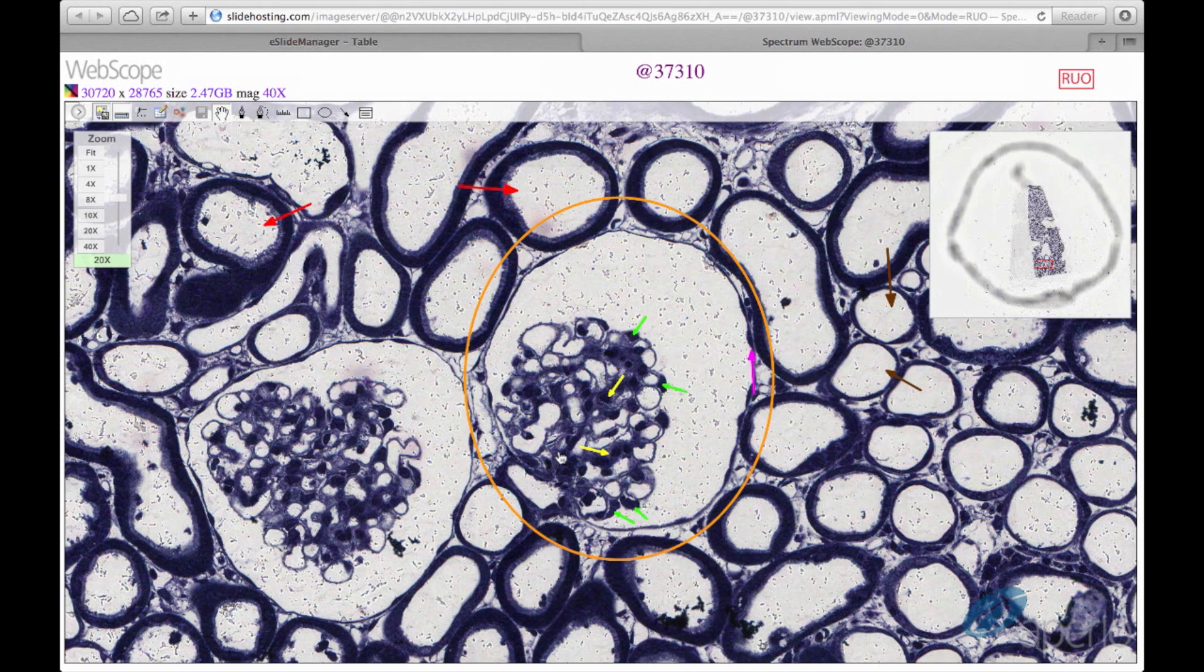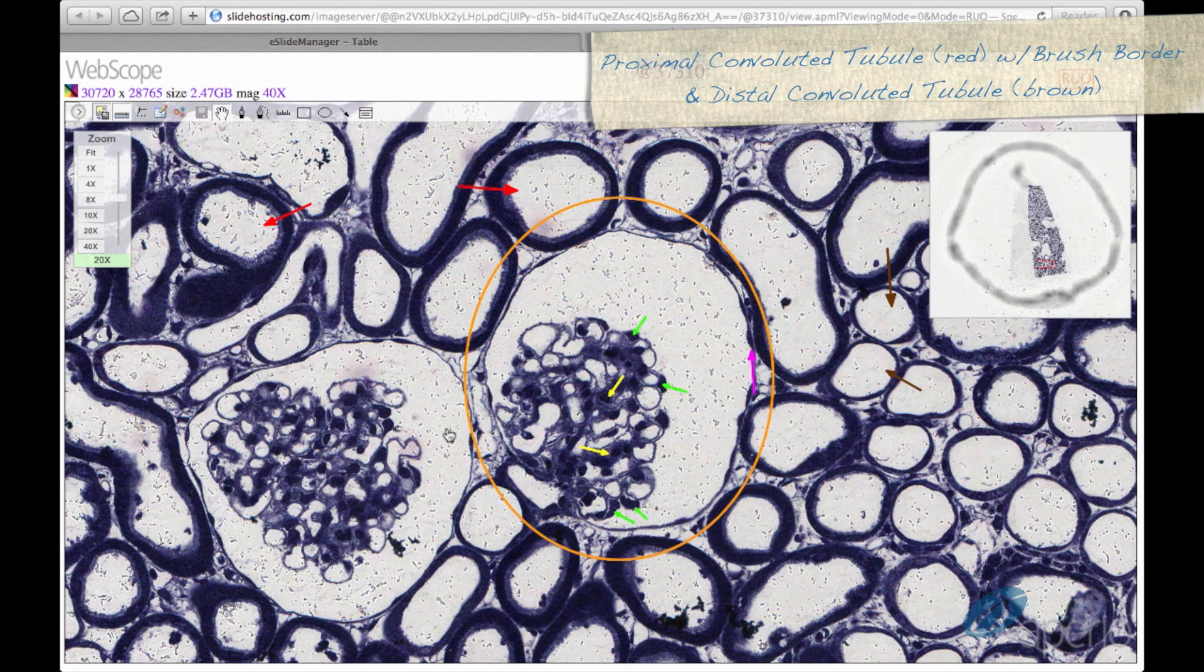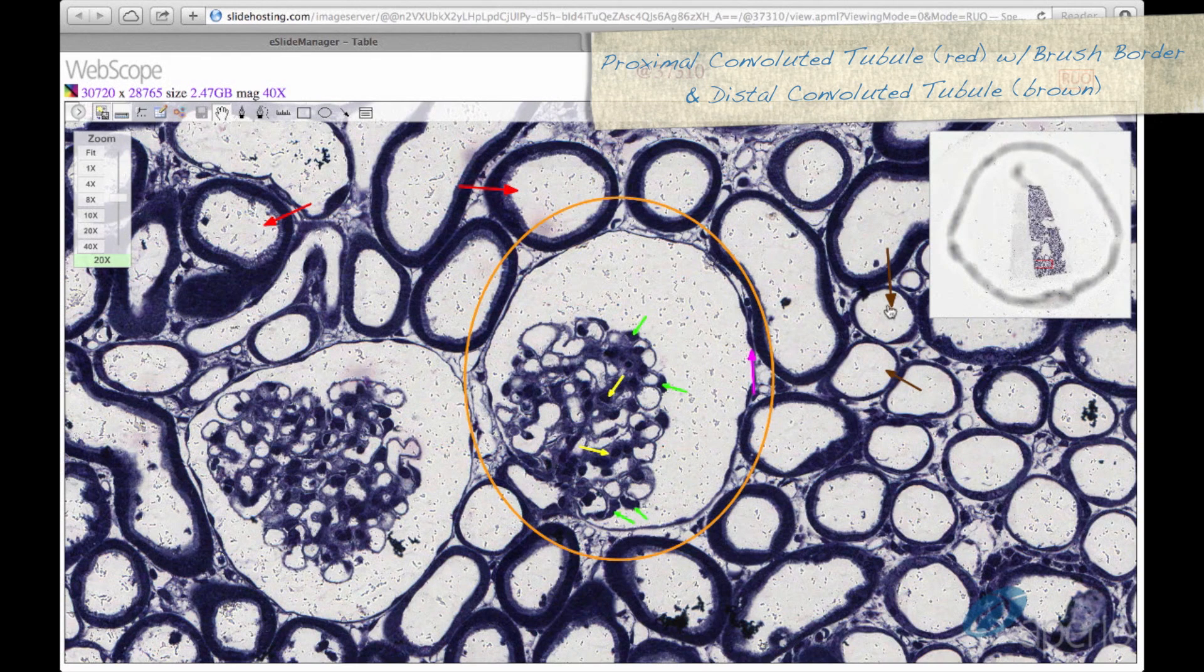Outside of the renal corpuscle, we can again find the proximal convoluted tubules, seen here at the red arrows, and the distal convoluted tubules, seen at the brown arrows. With this stain, we can see the brush border of the proximal convoluted tubule, well preserved.